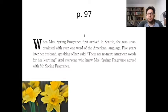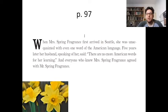This is the very first paragraph of the story. When Mrs. Spring Fragrance first arrived in Seattle, she was unacquainted with even one word of the American language — she's a recent immigrant who doesn't speak English. Five years later her husband, speaking of her, said there are no more American words for her learning. English has like a quarter million words, so she must have other words to learn.